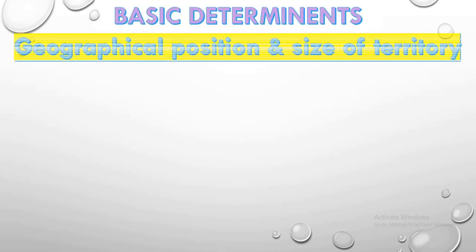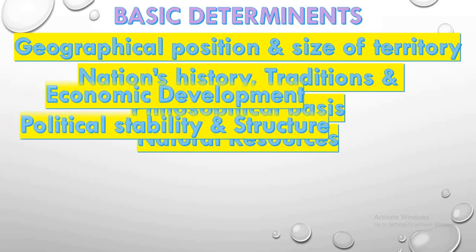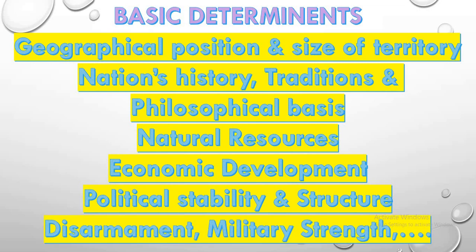Next, let's see the basic determinants of foreign policy. First, geographical position and size of territory must be followed properly. Then, the nation's history, tradition and philosophical basis are determinants that have to be followed. Natural resources have to be preserved. Economic development has to be maintained. Political stability and structure of government have to be created for the development of the nation. Apart from this, disarmament — not to use nuclear weapons — is key, but we also need to increase military strength to safeguard our nation. These are the basic determinants of foreign policy to be followed by member countries.